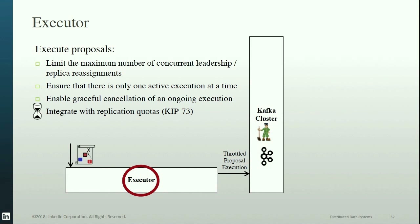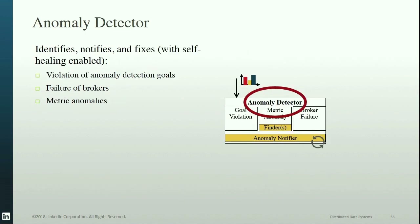Going forward, Cruise Control would like to provide integration with replication quotas — introduced in open source Apache Kafka with KIP-73 — which will further improve the current throttling mechanism based on the number of replica or leadership transfers. The anomaly detector is a component for identifying anomalies, notifying relevant parties, and fixing detected anomalies. An anomaly could be a violation of an anomaly detection goal, a broker failure, or a metric anomaly. Notification can be in the form of sending an email, and fixing anomalies automatically requires enabling self-healing for the relevant anomaly detector.